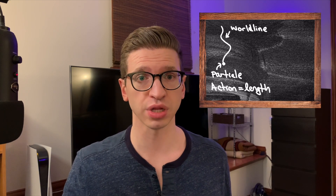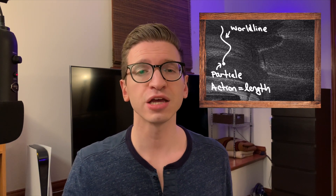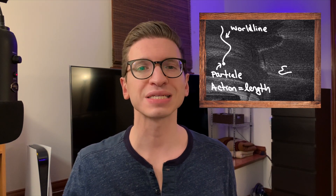We've been learning that the action for a particle in Einstein's theory has a very simple and geometric interpretation. As the particle travels around through space-time, it traces out a curve that's called its worldline. Then the action for the particle is just equal, up to some factors, to the length of the worldline. The principle of least action then says that the particle is going to choose the shortest path that it can in traveling between two events in space-time. String theory replaces the fundamental role of the particle with a tiny loop of string.